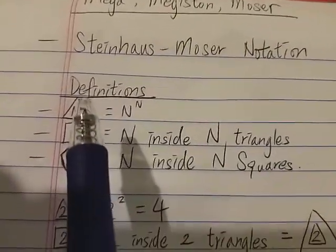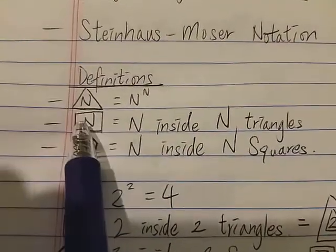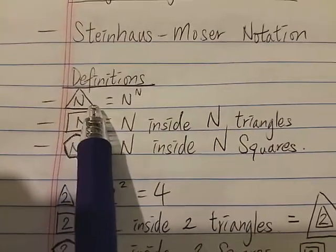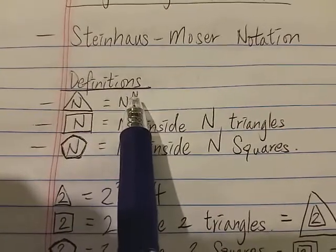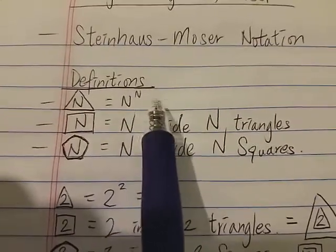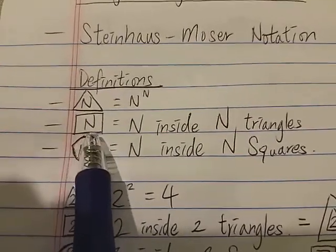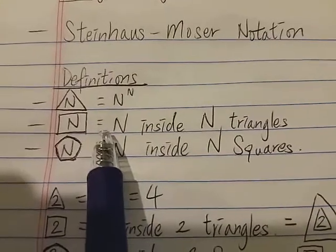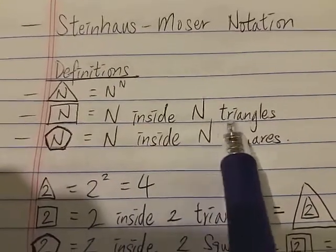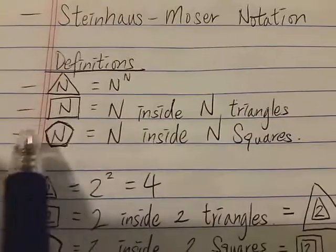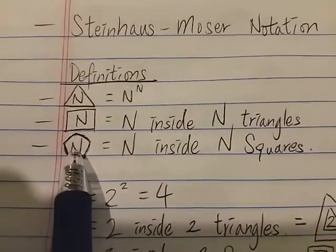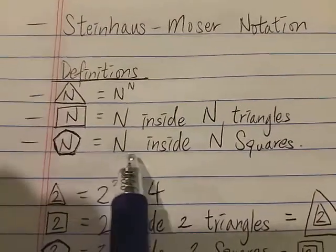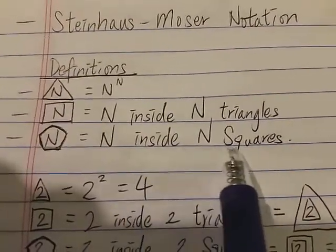Now let's look at the definitions. The first definition is n in a triangle, which is just n to the power of n. The second definition is n in a square, which is equal to n inside n triangles. The third definition is n in a pentagon, which is equal to n inside n squares.